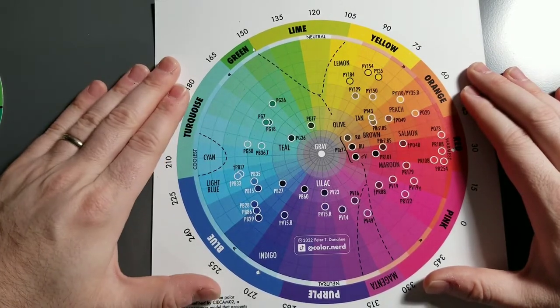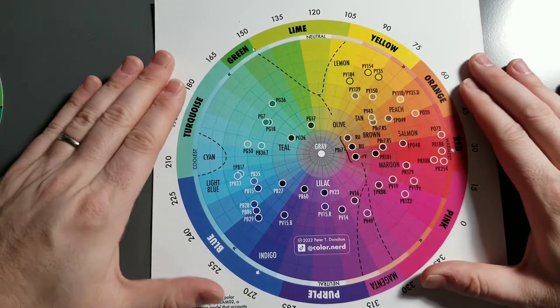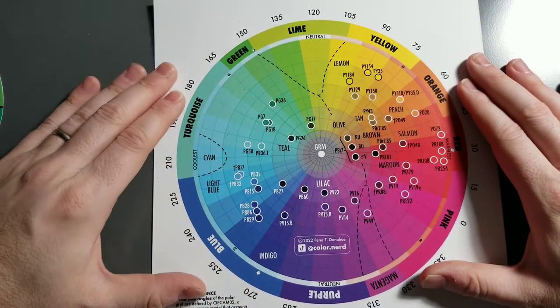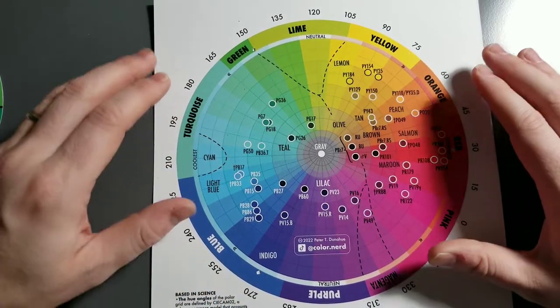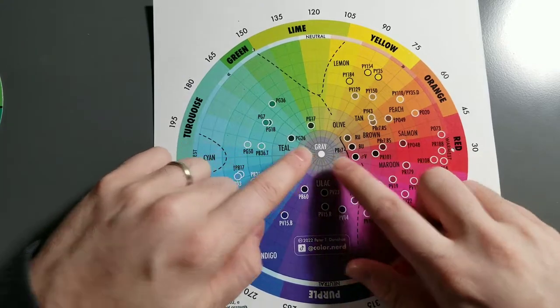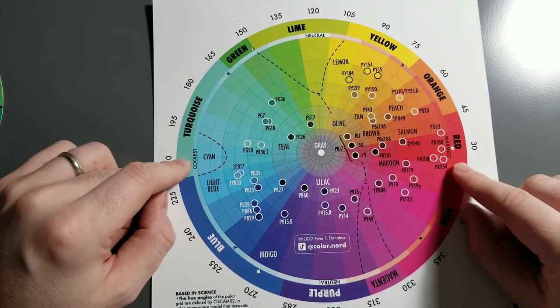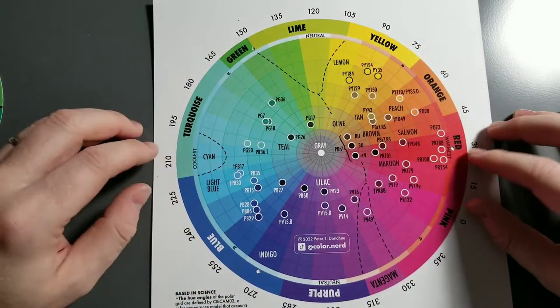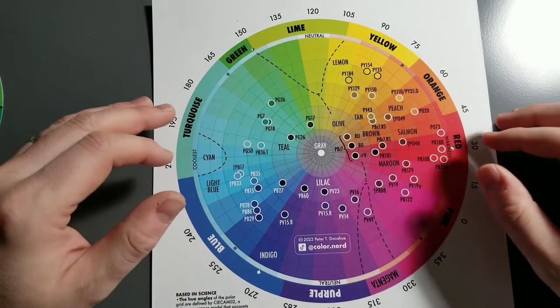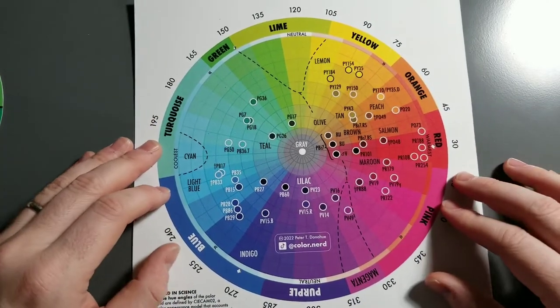Actually, the concept of complementary colors comes out of the study of light and how we perceive light. This idea that you should mix complements together to get neutral is confusing color, which is a conceptual thing we perceive, with pigment, which is a physical thing that you can mix together on a palette.